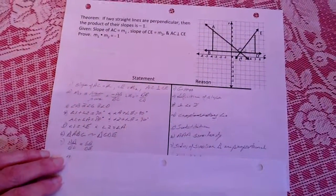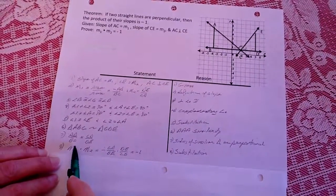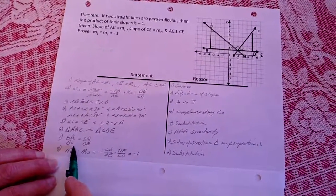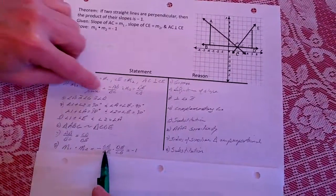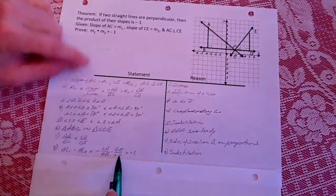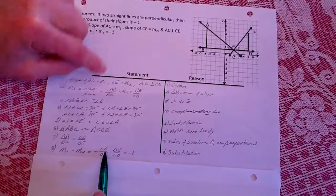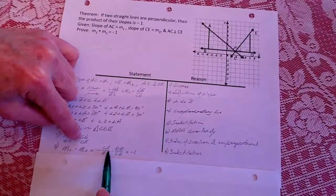And from there, by substitution, put it in here. By substitution, I can find out that I have this right here, which is the same as this. But that's a negative.